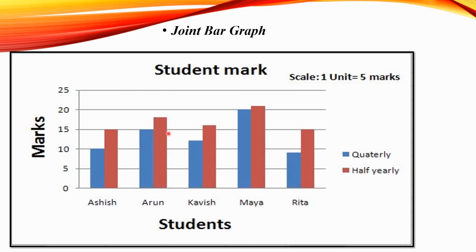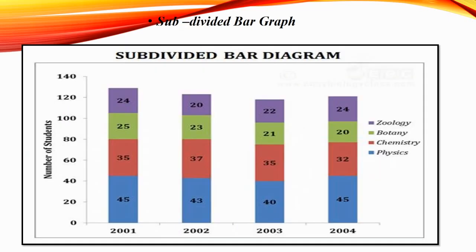In a joint bar graph, the quarterly and half-yearly marks of a student are compared. Quarterly is shown in blue color and half-yearly is shown in red color, so we can compare the marks of a student in both exams. In a subdivided bar graph, the same bar is divided into four groups — blue for physics, red for chemistry, green for botany, and violet for zoology — comparing subjects for the year 2001 in the same graph.